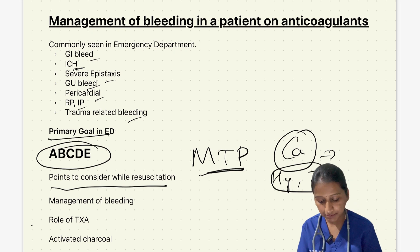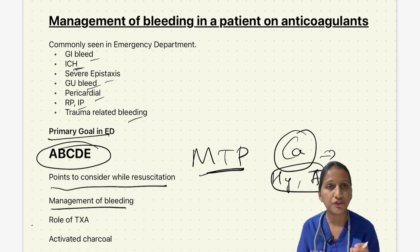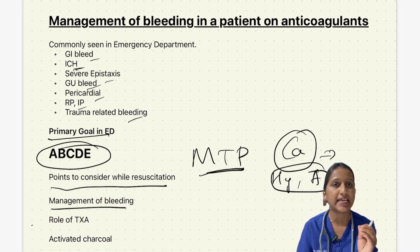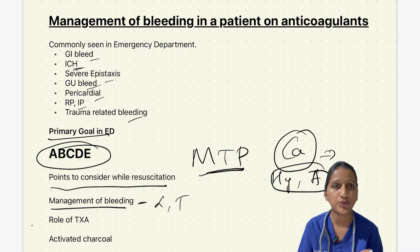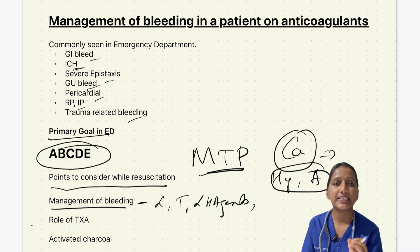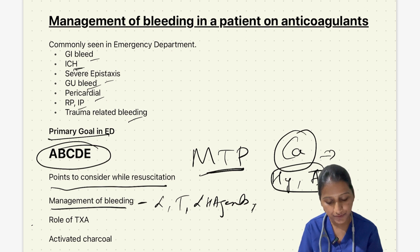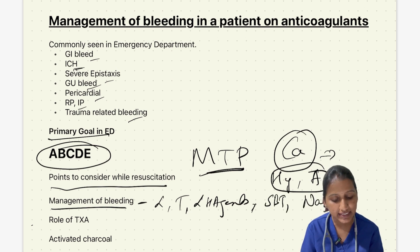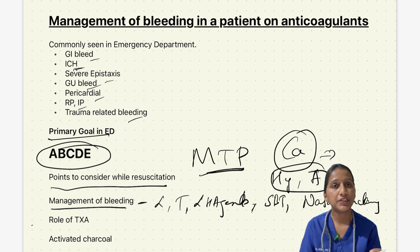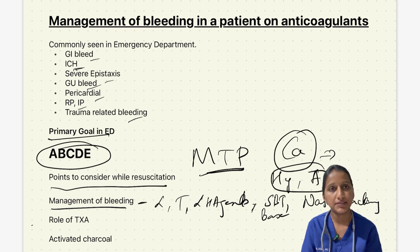Management of bleeding can be done based on the site of bleeding. For external bleeding, local compression bandage or tourniquet can be used along with local hemostatic agents. In case of variceal bleeding, a Sengstaken-Blakemore tube can be used. In case of severe epistaxis, nasal packing can be considered.